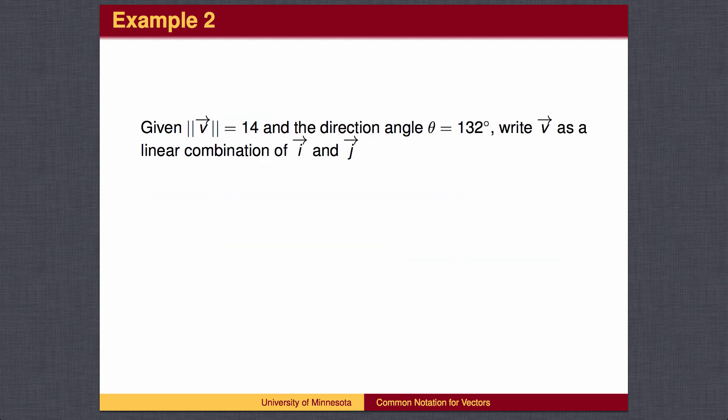In this second example, we are given the magnitude and direction of the vector v and need to convert to the rectangular form. The x-coordinate is the length times the cosine of the angle, and the y-coordinate is the length times the sine of the angle.